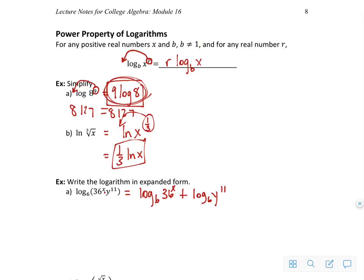But now I can take an additional step of taking this exponent and moving it out front using the power property of logarithms. And I can also move this 11 out front here, leaving me with x log base 6 of 36 plus 11 log base 6 of y.